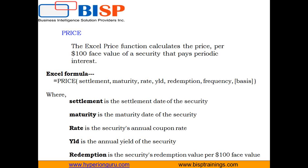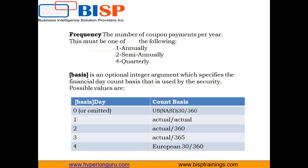Next we have the redemption value, which is the bond's redemption value per $100 face value, and in almost every case this will be $100. Next we have the frequency, which is the number of coupons paid every year. The value can be either one, two, or four, meaning the coupon will be paid annually, semi-annually, or quarterly.